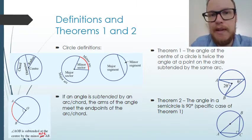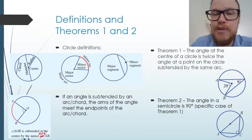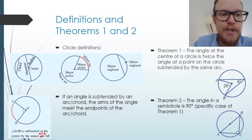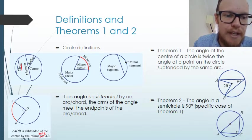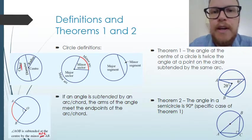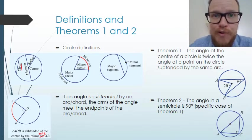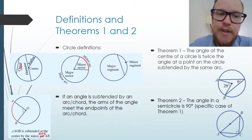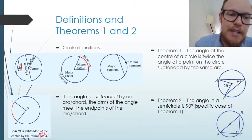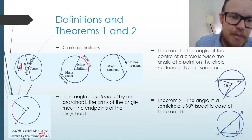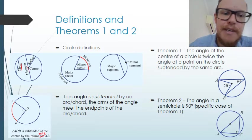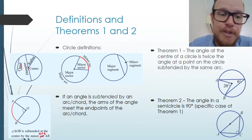If we have a line in a circle that joins two sides of the circle together, that is called a chord. A special chord is one that goes through the centre of the circle — the diameter is a special chord and it goes through the centre of the circle.